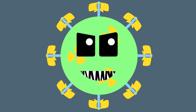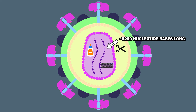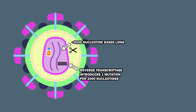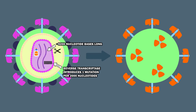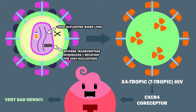HIV is infamous for its high rate of mutation. HIV's RNA is about 9,200 nucleotide bases long, and reverse transcriptase introduces a mutation about once per 2,000 incorporated nucleotides. With the rate of viral replication being so high, a second strain of virus sometimes develops: X4-tropic, or T-tropic HIV. T-tropic HIV binds to the CXCR4 co-receptor, which is found exclusively on T-cells. This is very bad news, as it speeds up viral progression.